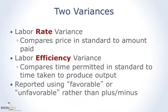The two labor variances are called the rate variance, which compares the price in the standard to what you paid, and the efficiency variance, which compares how long you took to how long you were supposed to take in making the final units. The difference between the standard and the actual in time and in price are reported as either favorable or unfavorable rather than plus or minus — we report them as an absolute value difference and then label them favorable or unfavorable depending on whether they were better or worse than standard.